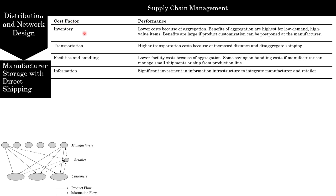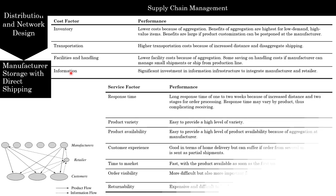Looking at costs for drop shipping: inventory costs are typically low. Transportation costs are higher because of increased distance and disaggregated shipping. From a facility and handling perspective, aggregation results in lower facility costs because everything is handled in one facility, and there are some savings on handling cost if the manufacturer can manage small shipments or ship from the production line. However, significant investment in information infrastructure is needed to integrate the manufacturer and retailer.